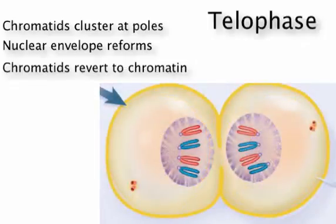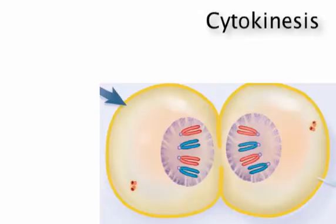During anaphase and telophase, what's also taking place is called cytokinesis. This is division of the cytoplasm into two new cells.